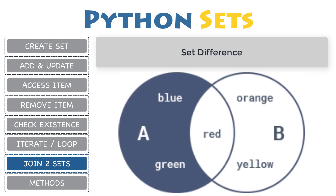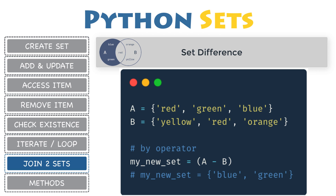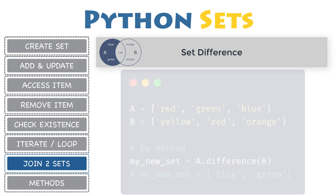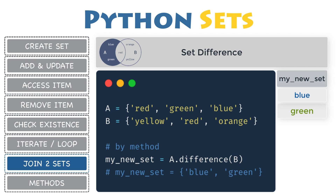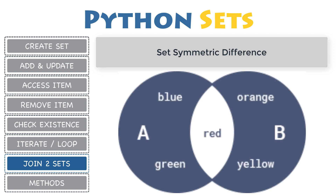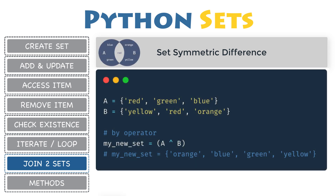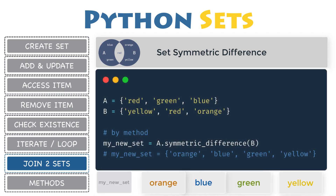Set difference: set difference of A and B is the set of all items that are in A but not in B. You can compute the difference between two or more sets using the method difference or the minus operator. Consequently, the difference of both sets will result in a new set containing the items blue and green, because these items are present in the first set A but not in the second set B. Set symmetric difference: symmetric difference of sets A and B is the set of all elements in either A or B, but not both. You can compute symmetric difference using the method symmetric_difference or the XOR operator. The result will give you a new set with items orange, blue, green, and yellow, since red is part of both sets.